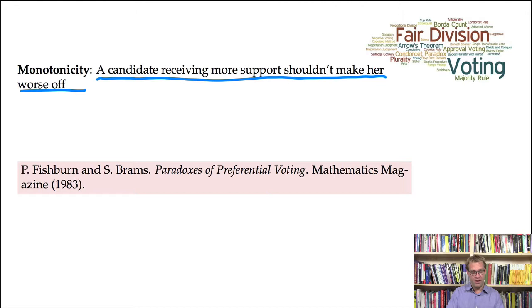The paradoxes we're going to look at were discussed in a nice article by Peter Fishburne and Stephen Brams, where they first identified these problems with plurality with runoff.